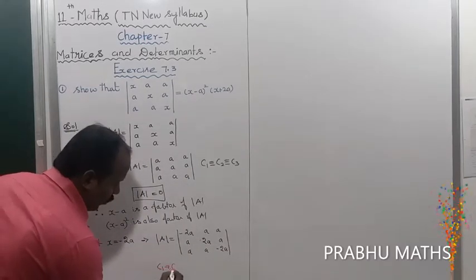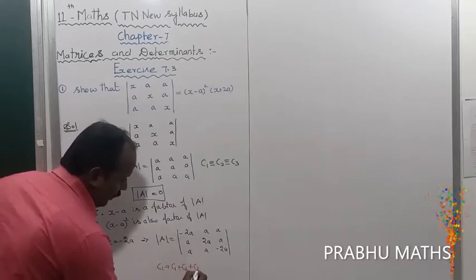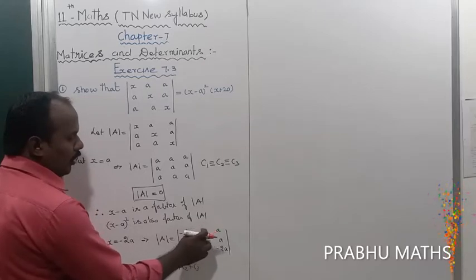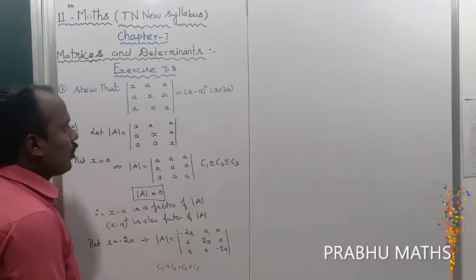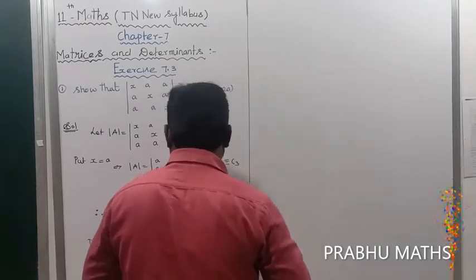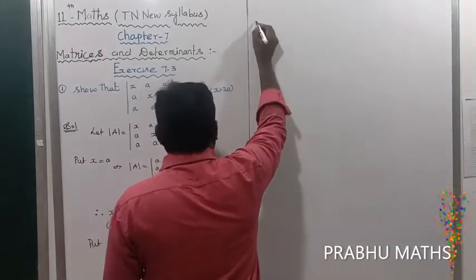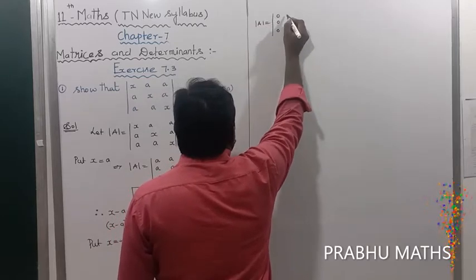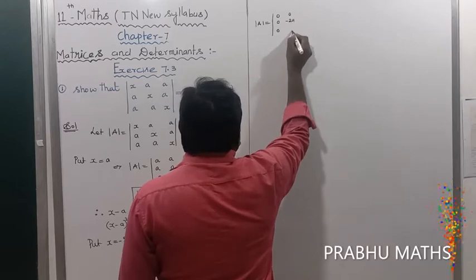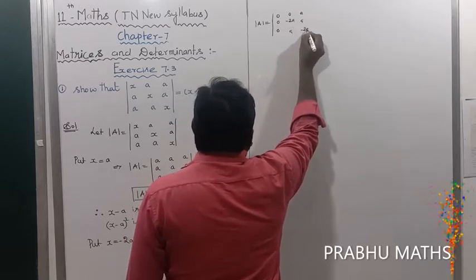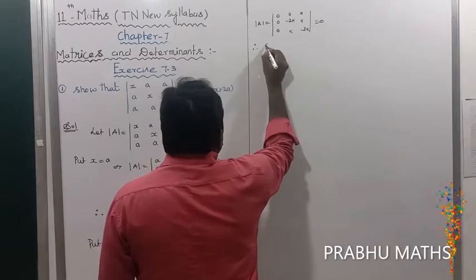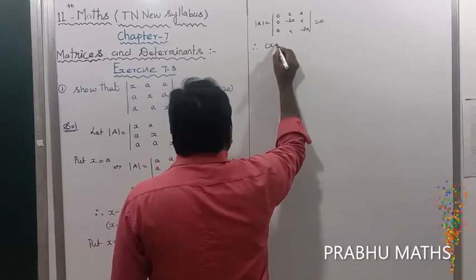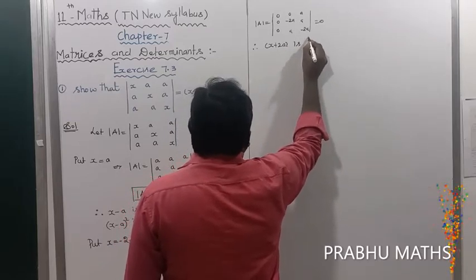After c1 → c1 + c2 + c3: minus 2a plus a plus a equals 0, so the first column is fully zero. Therefore the determinant equals 0, so (x plus 2a) is a factor of Δ.